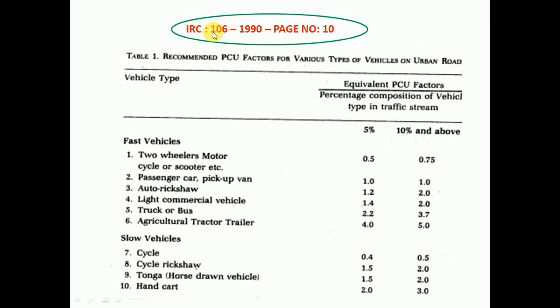You can refer IRC 106-1990, page number 10 — Table 1 is available. Table 1 shows recommended PCU factors for various types of vehicles on urban roads. In future, we are going to use the PCU factors for analysis purposes. For now, we must understand what vehicles we are going to count in a Traffic Volume Survey, whether it is a mid-block section or intersection.